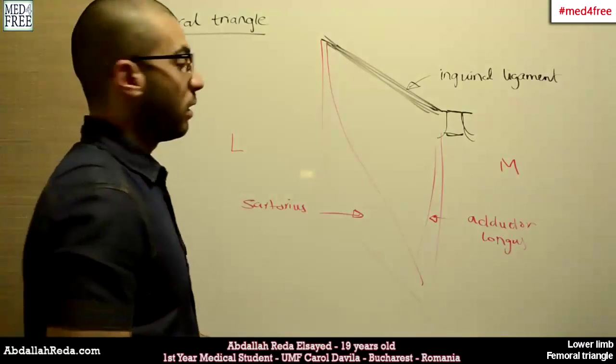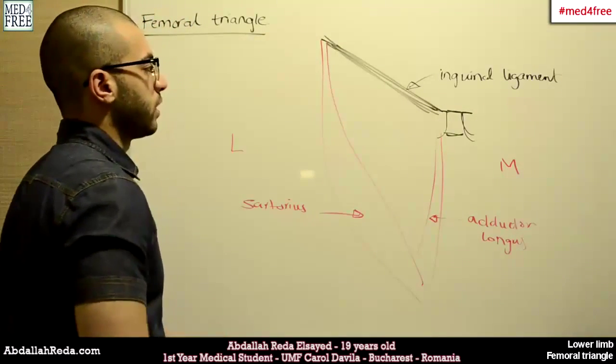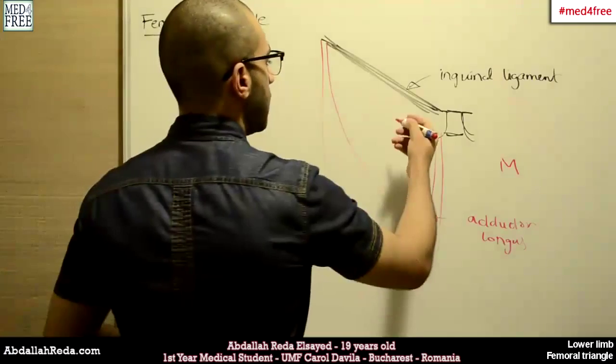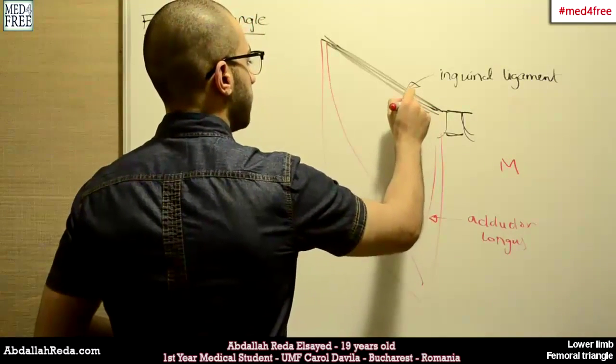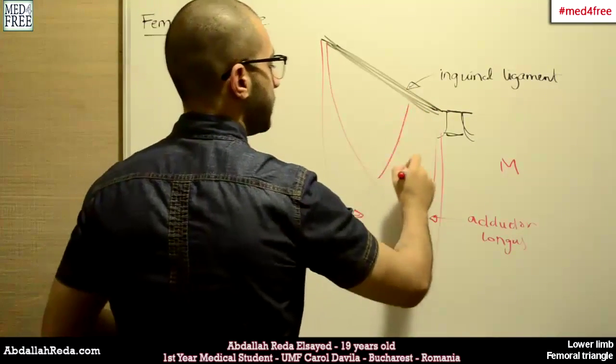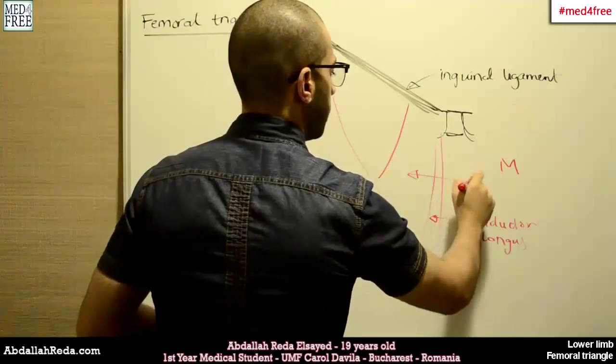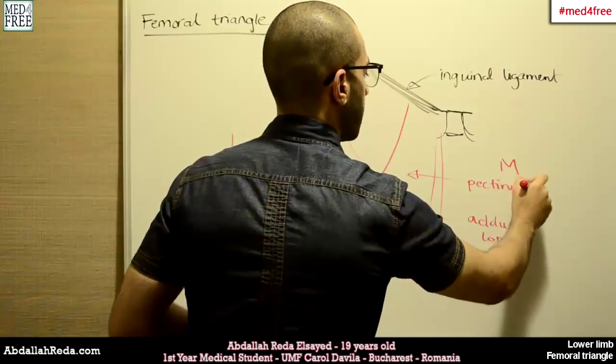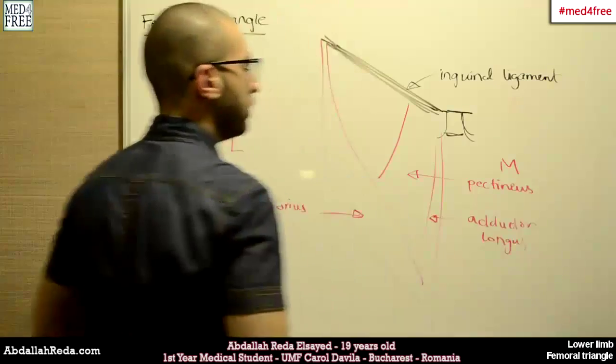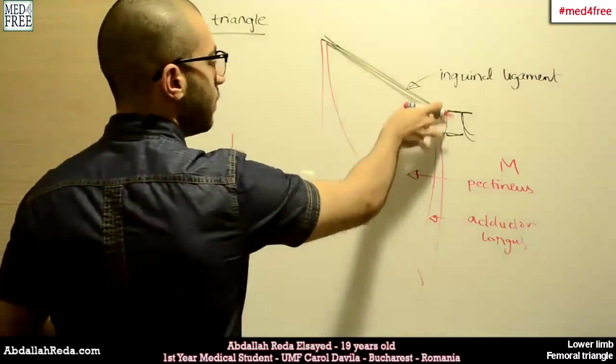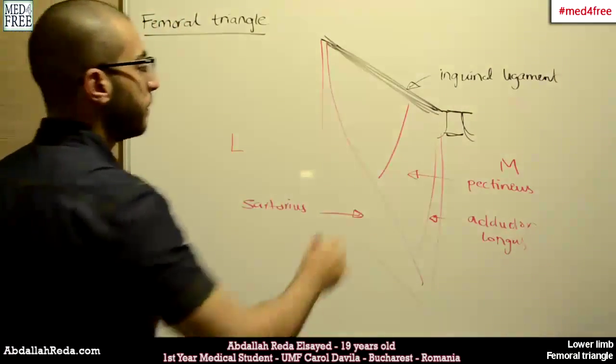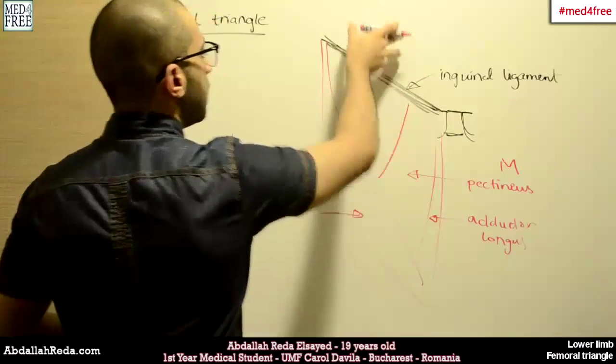Now, the floor of the Femoral Triangle is formed of the following muscles. Here, we have Pectineus. Pectineus Muscle forms the Medial part of the floor.